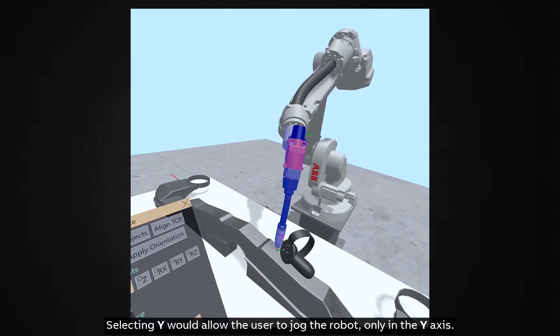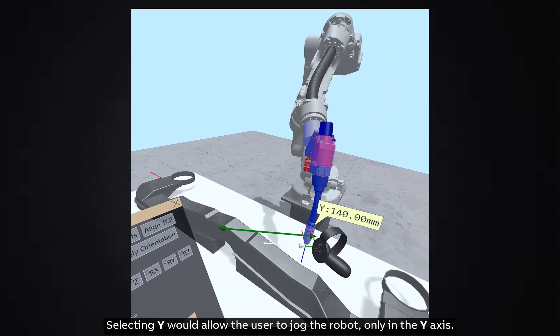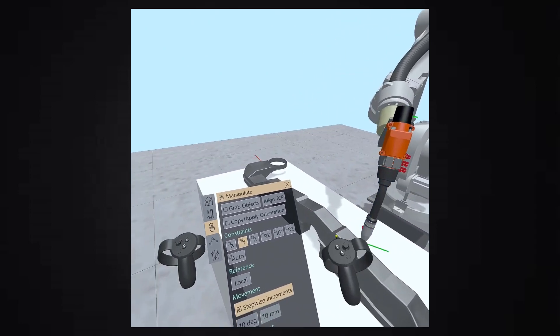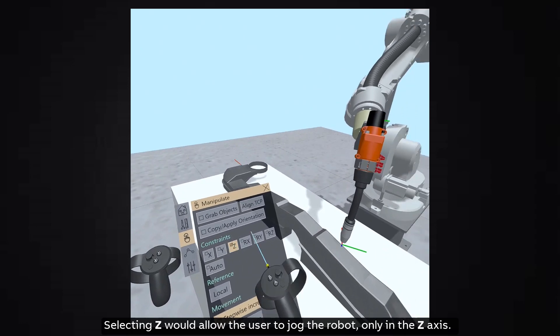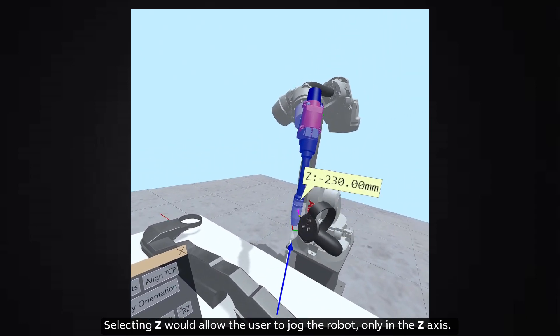Selecting Y would allow the user to jog the robot only in the Y axis. Selecting Z would allow the user to jog the robot only in the Z axis.